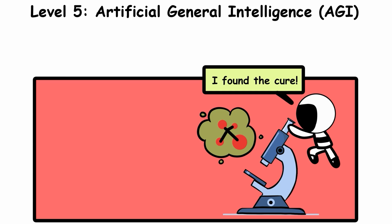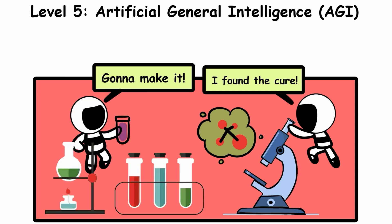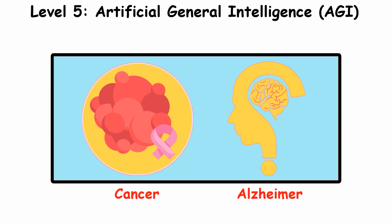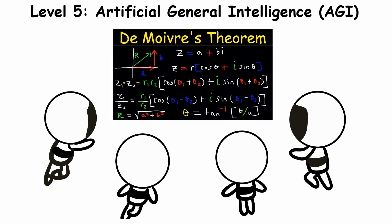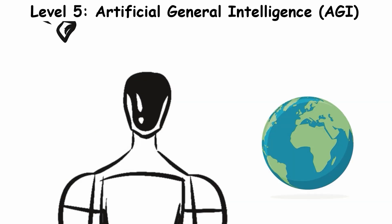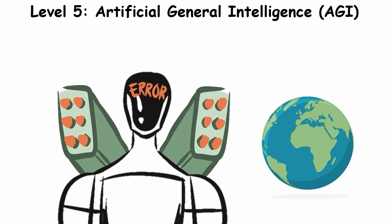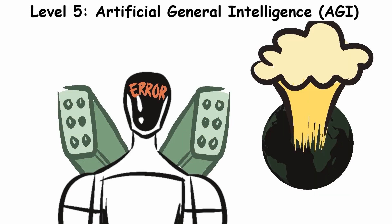AGI could provide unimaginable benefits, accelerating drug discovery for conditions like cancer and Alzheimer's, modeling quantum systems, decoding dark matter, or proving complex mathematical theorems. But then comes existential risks, including the potential for misalignment with human values, leading to outcomes ranging from the benign to the catastrophic.